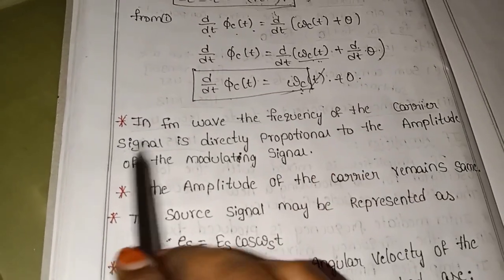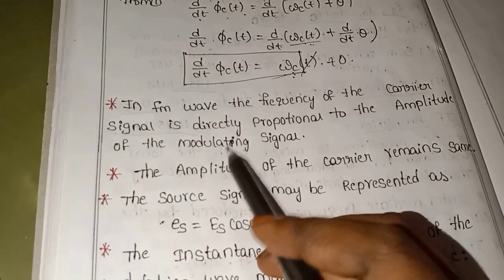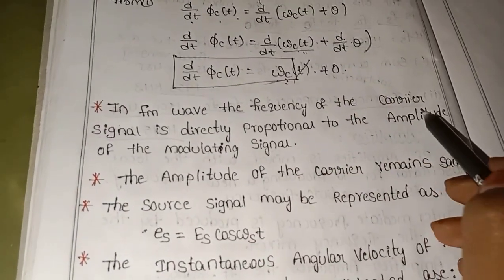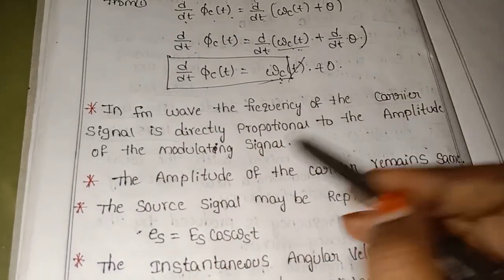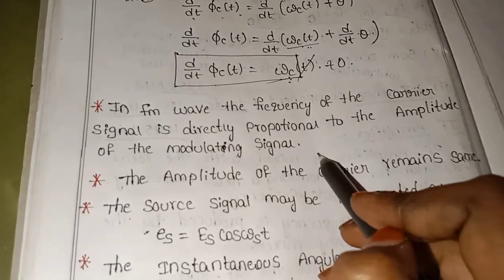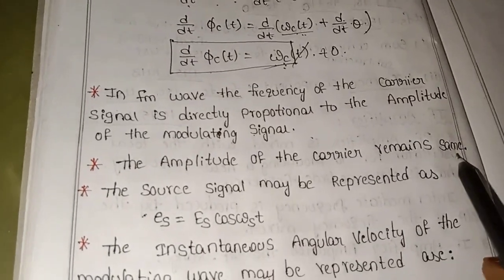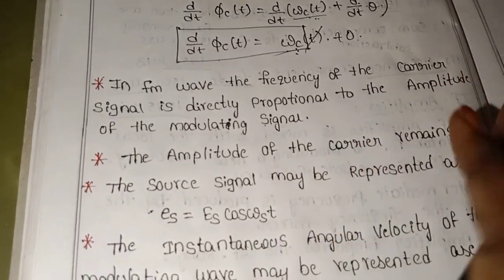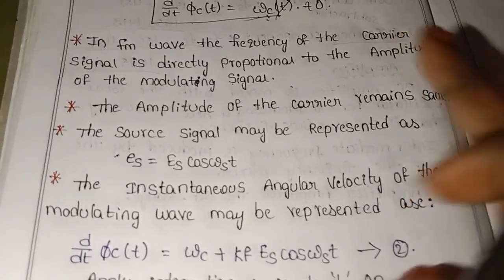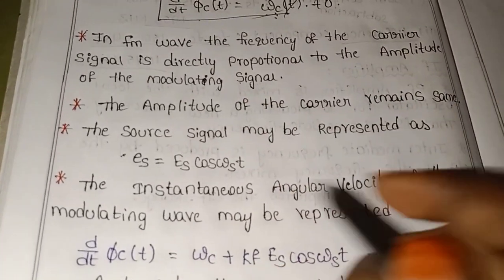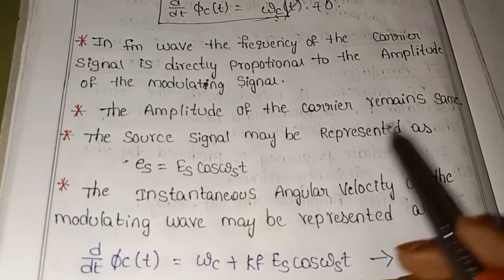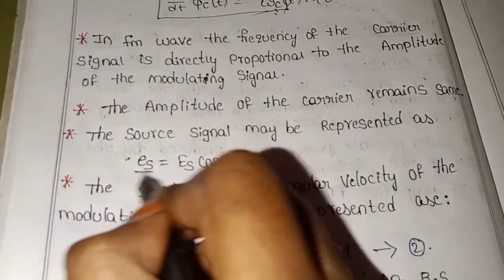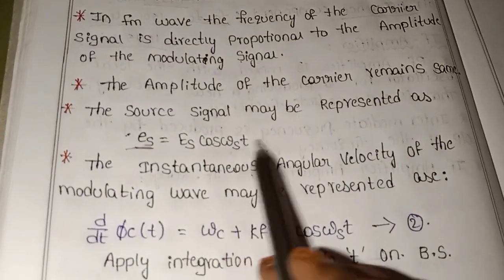In an FM wave, the frequency of the carrier signal is directly proportional to the amplitude of the modulating signal. The amplitude of the carrier remains the same — the carrier signal amplitude is constant. The modulating source signal may be represented as: es = Es cos(ωst).